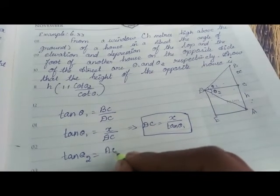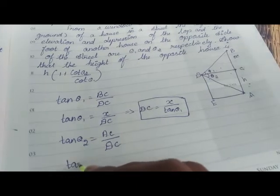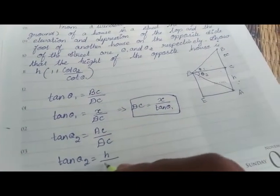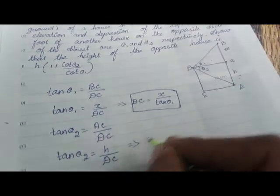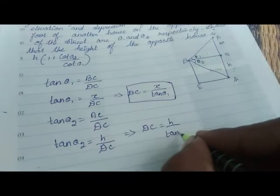So AC divided by DC is equal to h divided by tan theta2.